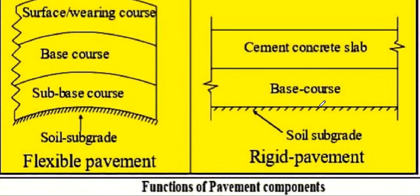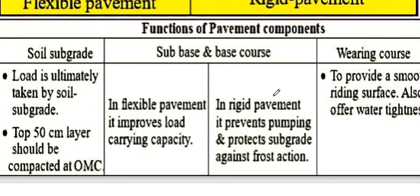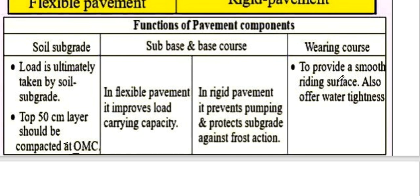Flexible pavement layers from bottom to top: soil subgrade, subbase, base, surface wearing course. Rigid pavement does not include a subbase course in the same way. The top 50 cm layer of soil subgrade should be compacted at OMC (Optimum Moisture Content). In flexible pavement, the subbase/base course improves load-carrying capacity; in rigid pavement, it prevents pumping and protects the subgrade against frost action.